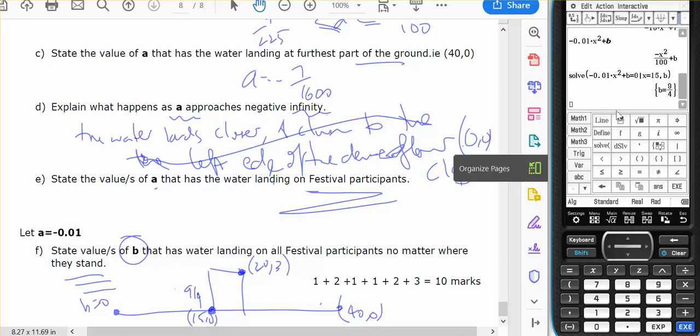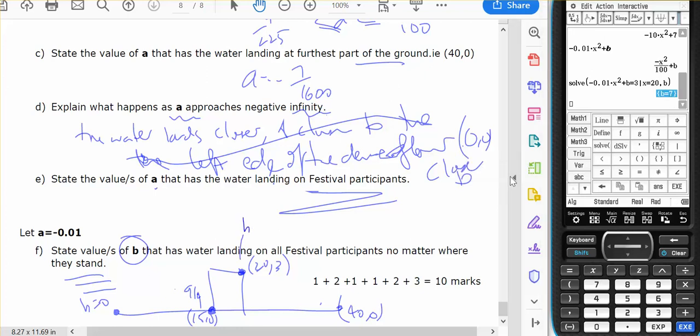For it to touch here, so when x equals 20, for it to equal 3, we've got b equals 7. And for it to land here at 40, for it to equal 0, b equals 16.